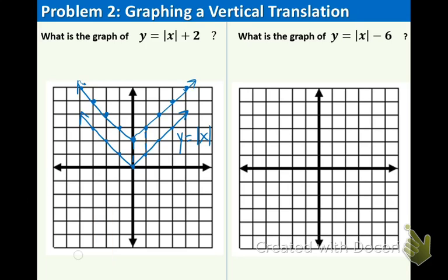Now let's try the right side: Y equals Absolute Value of X minus 6. Draw the parent function again. Now we're going down 6 — so this was up 2 and this is down 6. Count 1, 2, 3, 4, 5, 6, starting at the very bottom and going up 1 over 1. There is our new graph, Y equals Absolute Value of X minus 6.